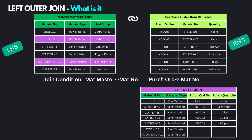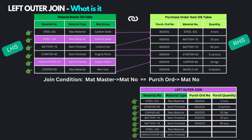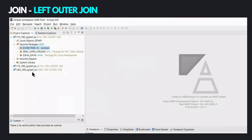So this is how left outer join works: all records from the left-hand side table will be retrieved, whether it has a matching record in the right-hand side table or not. Only matching records from the right-hand side table are retrieved. Now let us see how to create a CDS view with a left outer join in Eclipse.